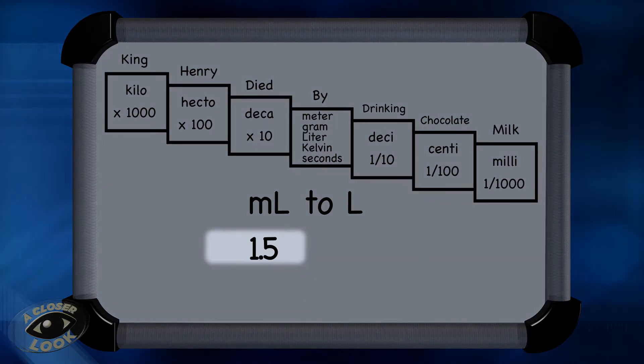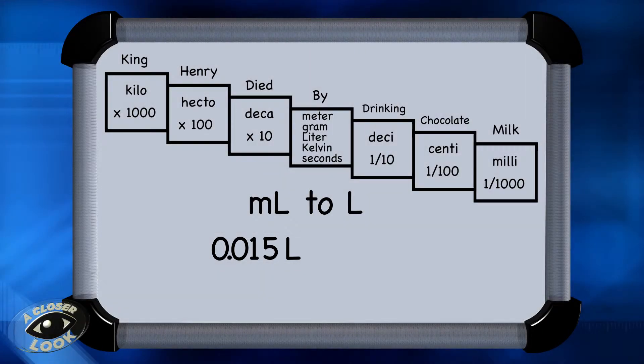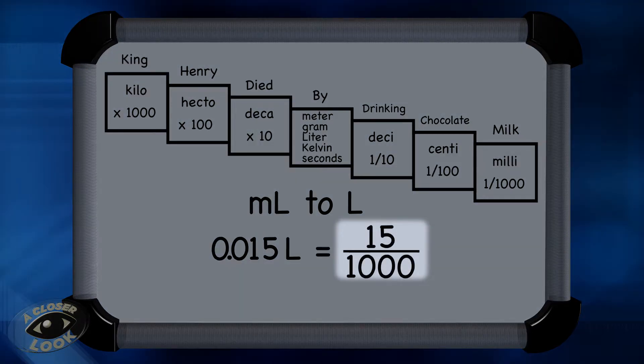That tells us what we have to do with the decimal. So we move the decimal point one, two, three places to the left, and any time you have one of these dips where there is no number, you fill that in with a zero, and we get 0.015 liters. You could have also found this number by dividing 1,000 into 15.